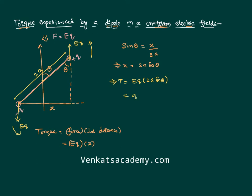Now I can substitute x and get the value of torque. Torque τ = Eq × x = Eq × 2a sin θ. I can rewrite this as q × 2a, which is defined as the electric dipole moment p. So τ = pE sin θ. This is the magnitude. We can also express this as the cross product: τ = p⃗ × E⃗, because the form AB sin θ represents the cross product of two vectors.